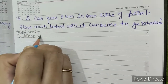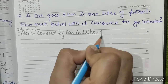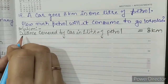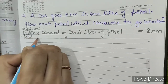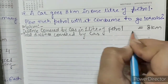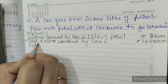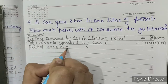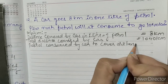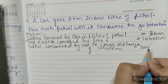Question number 13. Distance covered by car in 1 litre of petrol equals 8 km. Distance covered by car equals 1040 km. Petrol consumed by car to cover a distance of 1040 km equals 1040 divided by 8.